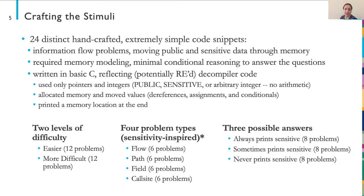We had 12 easier problems and 12 that we intended to be more difficult. Of the 24 problems, we broke them down into 4 problem types, inspired by flow, path, field, and call-site sensitivity analyses. We note, however, that we don't claim any formal flow-sensitive, path-sensitive, field-sensitive, or call-site-sensitive analyses. Rather, these problems are simply named to reflect the inspiration for the problems.